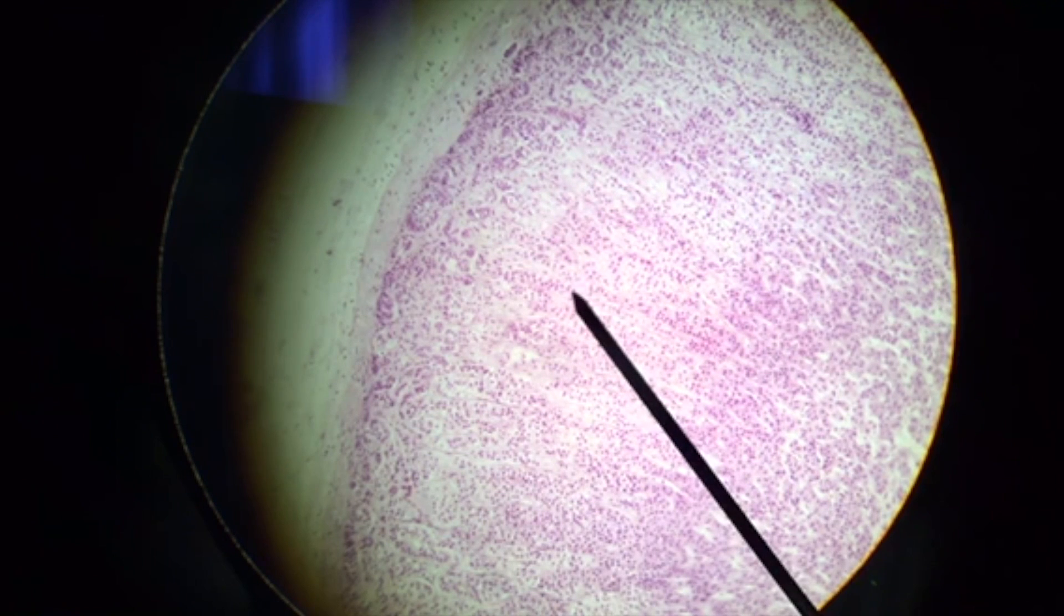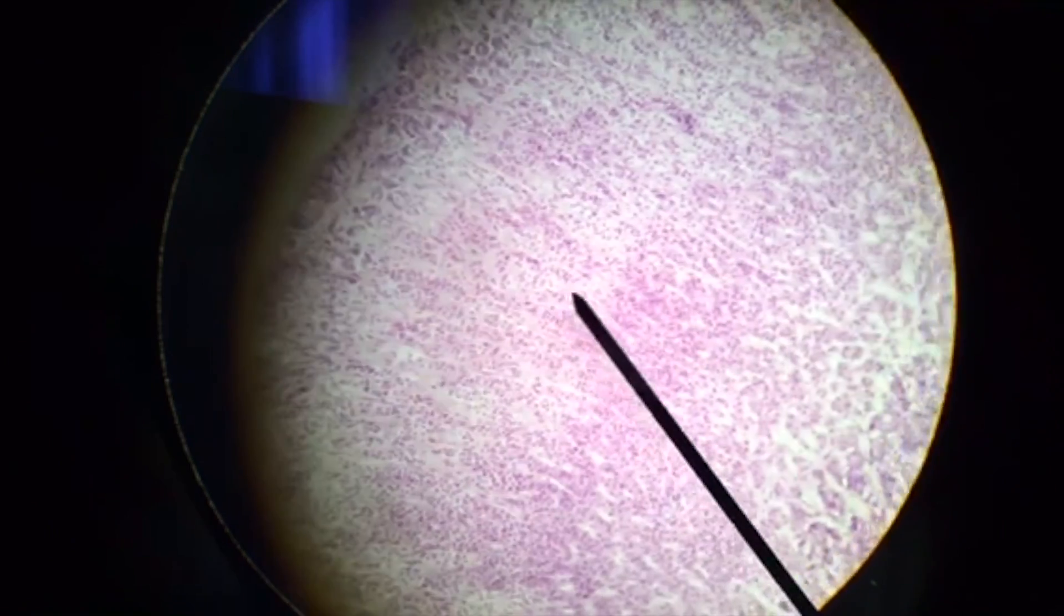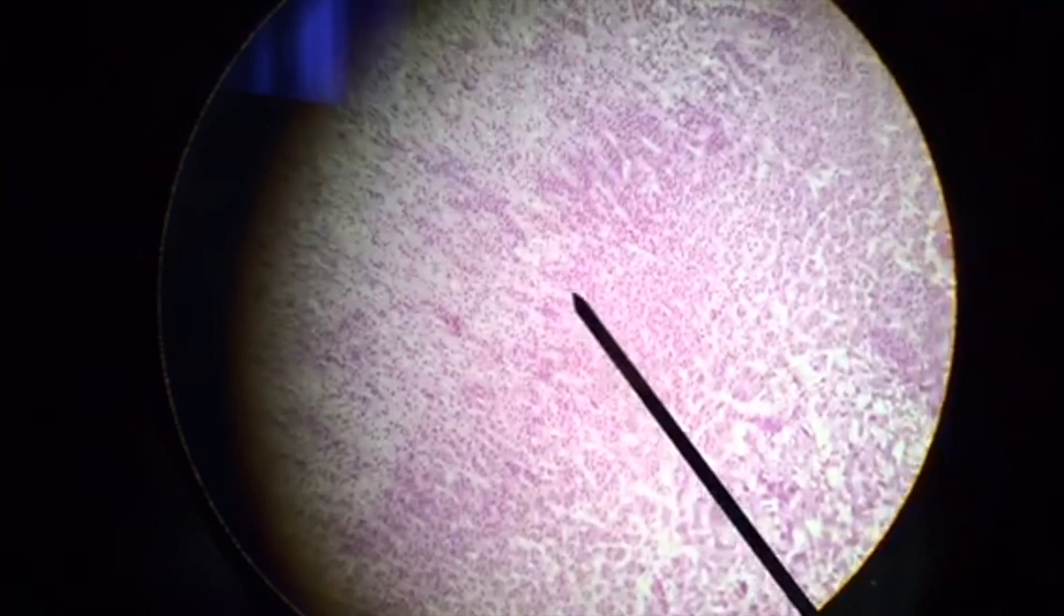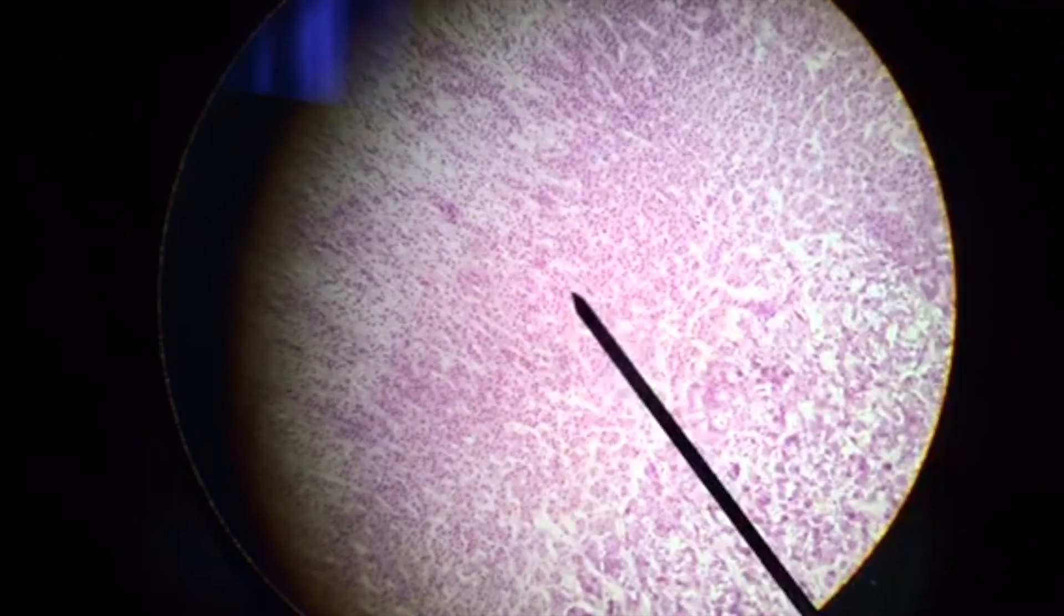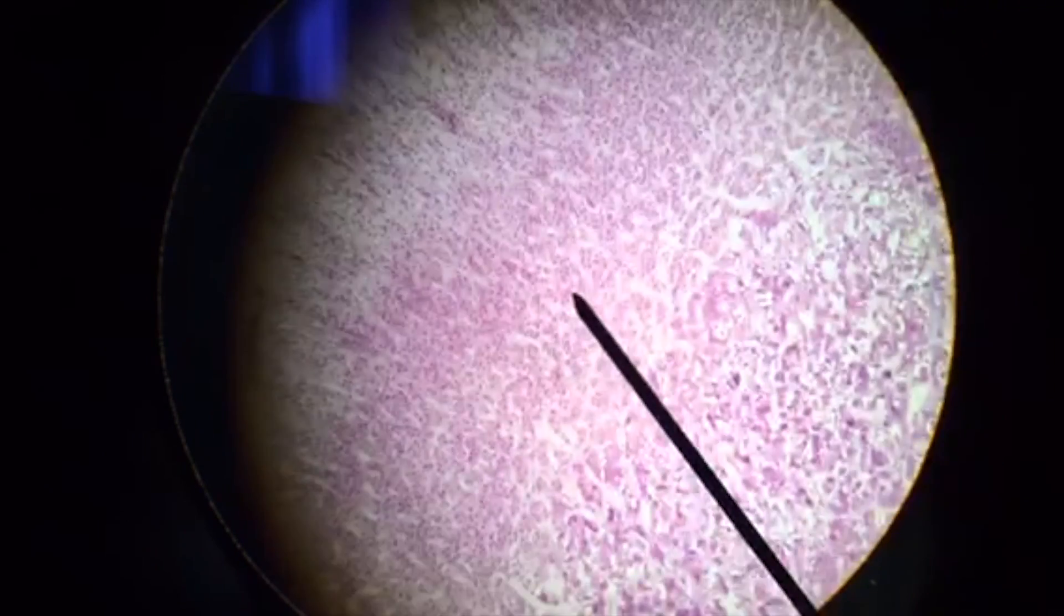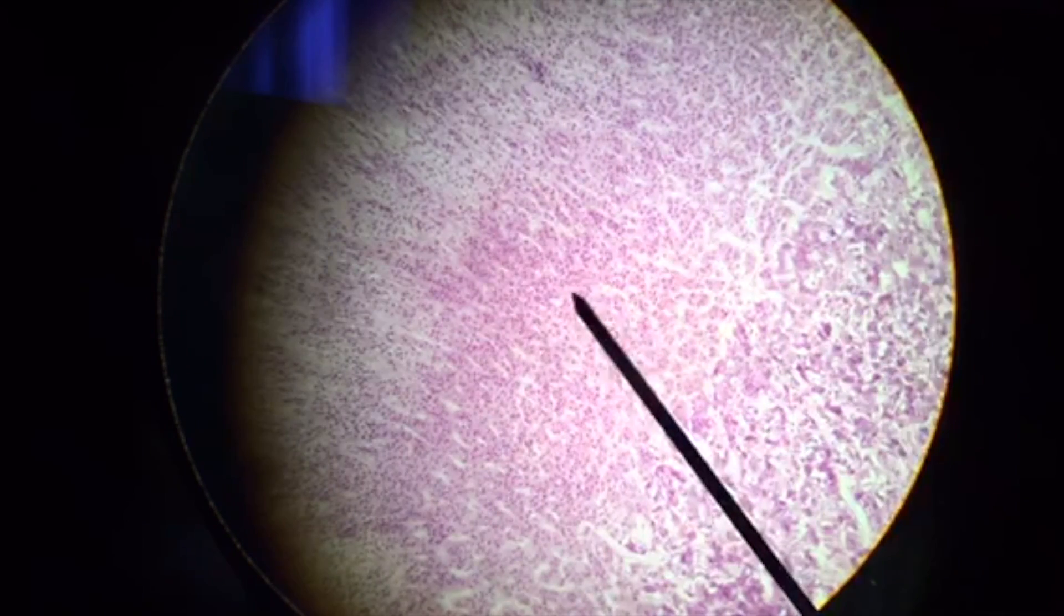The innermost layer is called the zona reticularis. Reticularis is Latin for arrangement in a net-like appearance. This is a thin innermost layer. Its job is to make sex steroids or androgens.